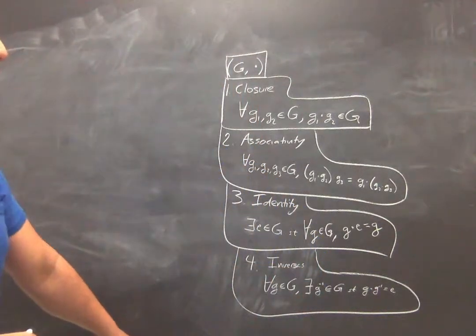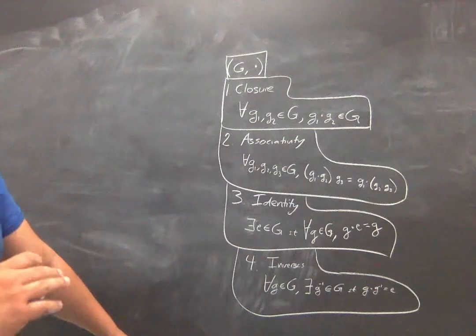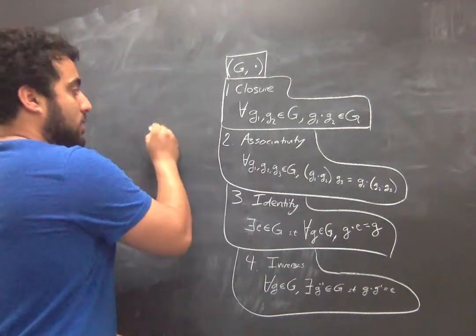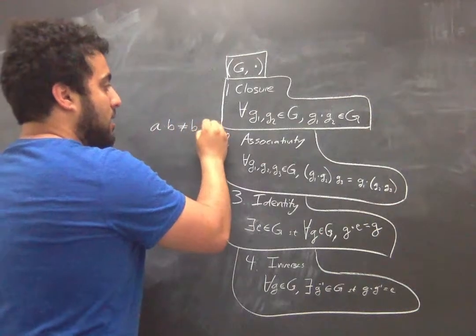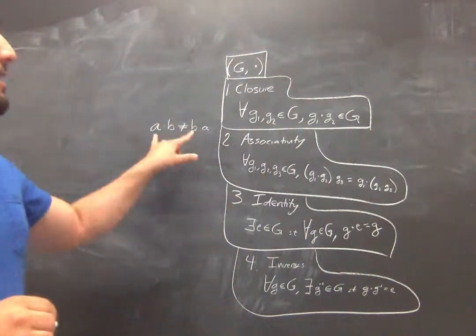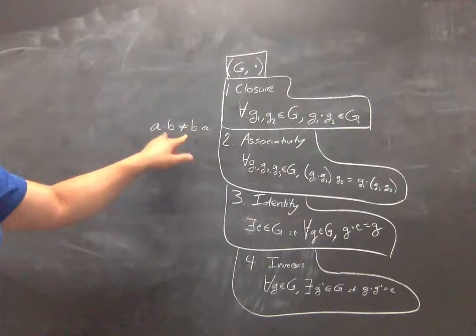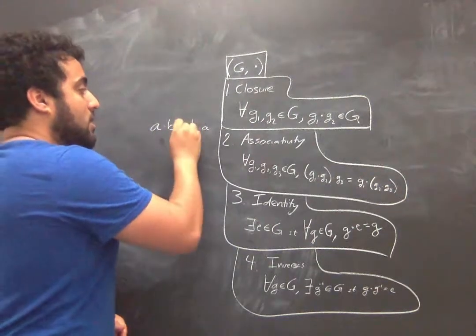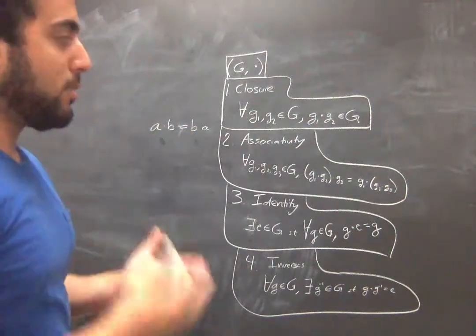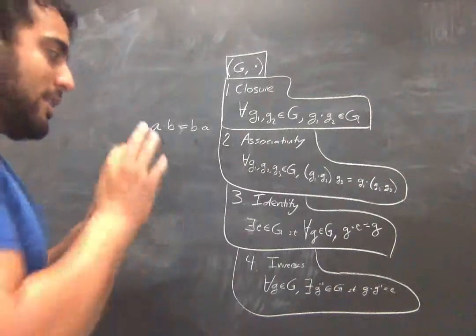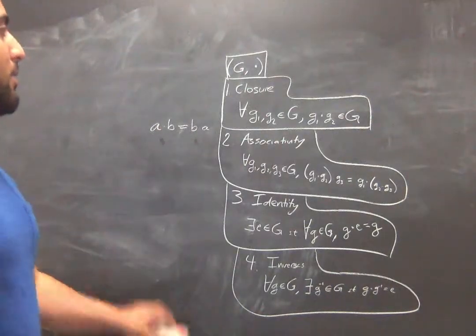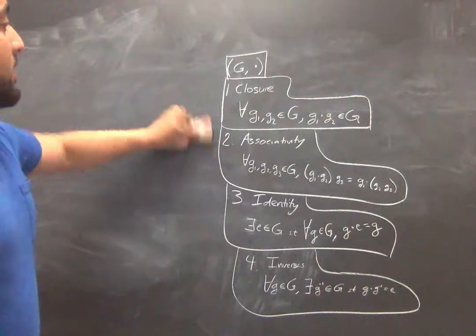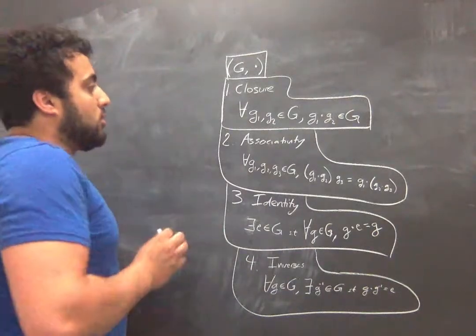Commutativity is not on this list, so it's completely possible to have a group which is non-commutative — a group for which A times B does not equal B times A. The special case where they are always equal: those commutative groups are called abelian groups. They're a special category of groups that end up being a lot simpler to describe in a lot of ways, but it's not necessarily true in the definition of a group.